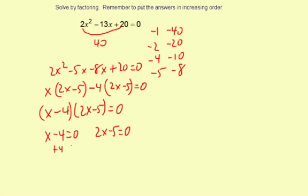Add 4 to both sides. So you get x equals 4. Add 5 to both sides. 2x equals 5, and then divide by 2. x equals 5 halves.